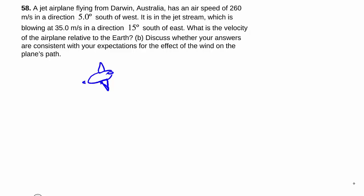It has an airspeed of 260 meters per second in direction 5 degrees south of west. So that again means let's say we have north that way and east that way, so there is west and we go 5 degrees south of that. When we talk about airspeed, that is how fast the plane is moving with respect to the air.